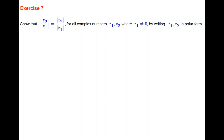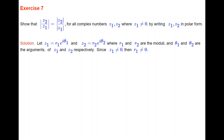In this exercise you're asked to show that the modulus of Z₂/Z₁ equals the modulus of Z₂ over the modulus of Z₁, for all complex numbers Z₁ and Z₂ where Z₁ ≠ 0. You're asked to show it by writing Z₁ and Z₂ in polar form. Let Z₁ = R1·e^(iθ₁) and Z₂ = R2·e^(iθ₂), where R1 and R2 are the moduli and θ₁ and θ₂ are the arguments of Z₁ and Z₂ respectively. Since Z₁ ≠ 0, its modulus R1 ≠ 0. We write Z₂/Z₁ = R2·e^(iθ₂) / (R1·e^(iθ₁)). Stop the video and complete the rest of the proof.